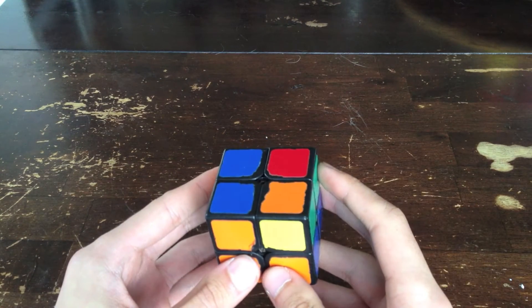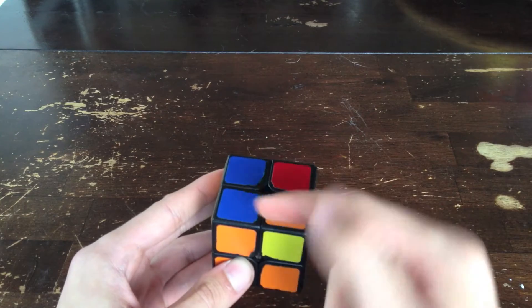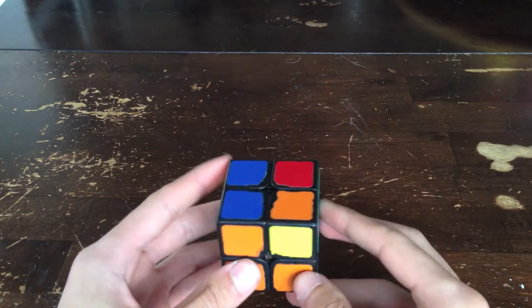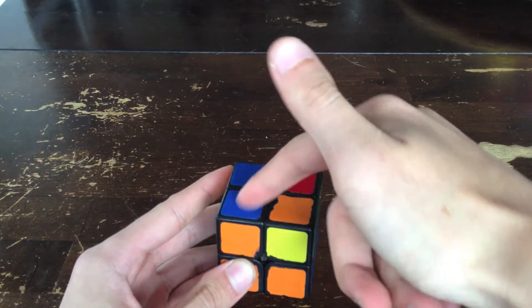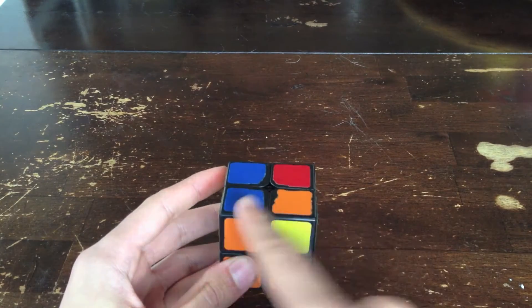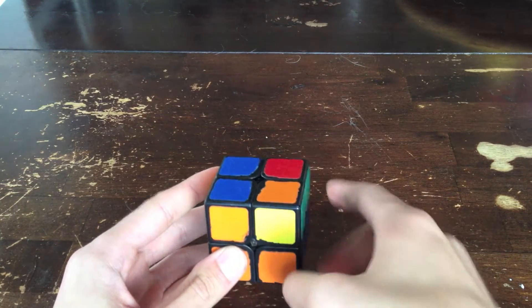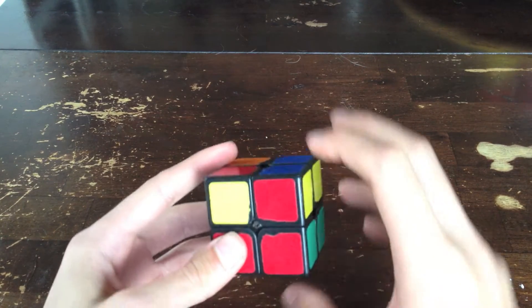For this one, it's the exact opposite. The block was here before and the opposite colors were here. But now the opposite colors are right here and the block is right here. So I just recognize block here, opposites right there. Hold it here and do this.